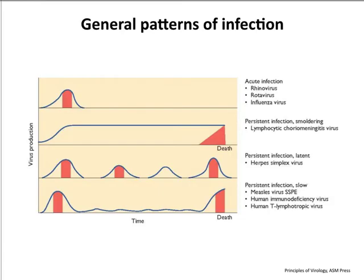Here are the general patterns of infection. The acute infection is shown on the top. This graph shows time on the x-axis versus virus production in the blue line, and disease is shown by the red bar. In an acute infection you have relatively rapid development of viral titers and disease, and then it goes away. Your immune system engages and for the most part you clear the infection. It's a finite infection — it comes and it goes. That's why we call it acute.